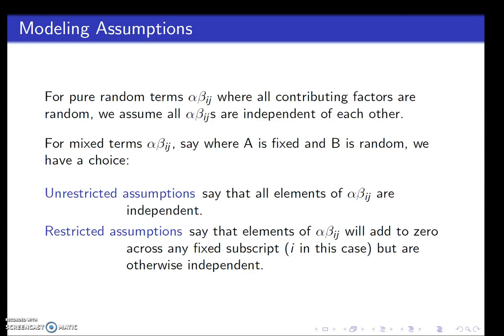And otherwise, it would be independent. So that summing to zero across a fixed subscript induces dependency among certain interaction terms, but the ones not involved in that particular sum would be assumed otherwise independent. So this is what we're going to mean by restricted and unrestricted models from now on. This is a particular case that applies to mixed models.